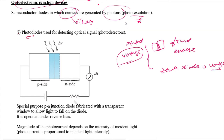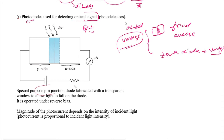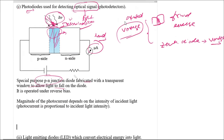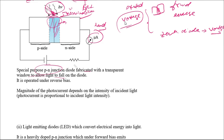Starting with the first device: the photo diode. A photo diode is a special category of diode used to detect optical signals — optical signal is nothing but light. It is a special purpose PN junction diode fabricated with a transparent window to allow light to fall on the diode. When light falls on this junction, charge carriers are produced and current is experienced in the load. The current flow is because of the photons falling on the junction.